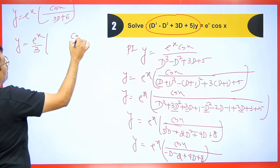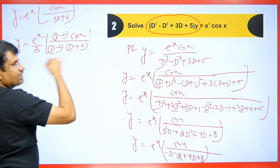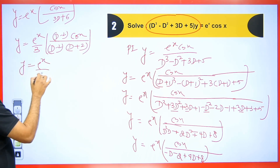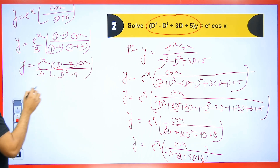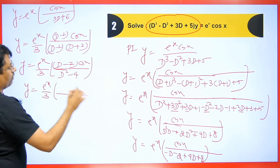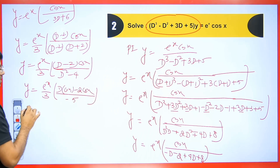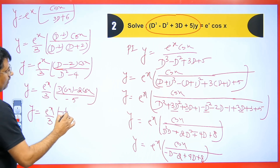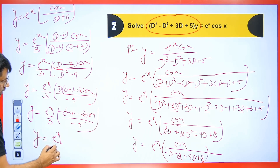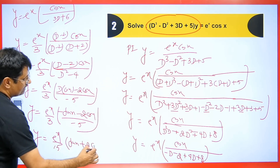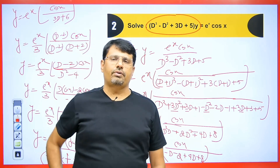We can simplify by taking 3 common. So e to the power x divided by 3, with cos x upon D plus 2. Multiply and divide top and bottom by D minus 2. Then y equals e to the power x upon 3, times D minus 2 times cos x, with denominator D squared minus 4. Replace D squared with minus 1: minus 1 minus 4 gives minus 5. The derivative of cos x is minus sin x, so we get minus sin x minus 2 cos x upon minus 5. Taking minus as common and cancelling: y equals e to the power x upon 15 times sin x plus 2 cos x. Add CF with PI for the final answer.